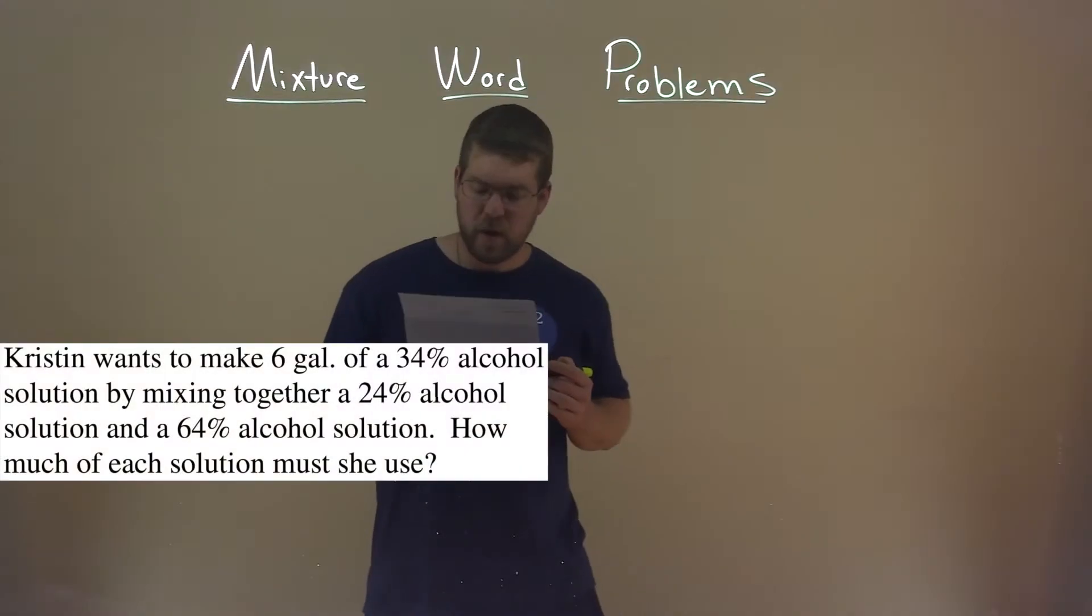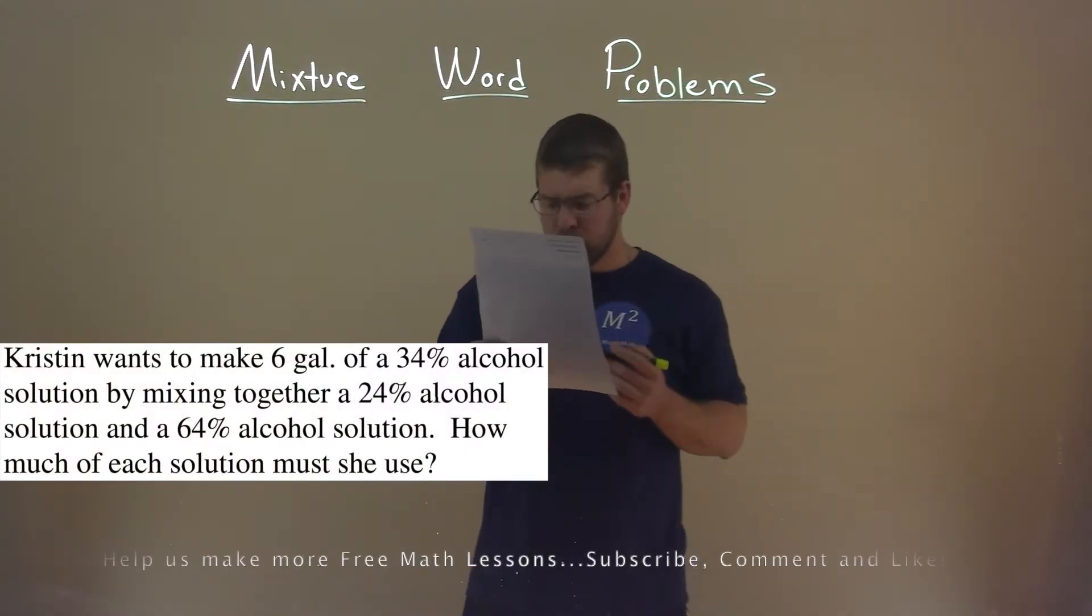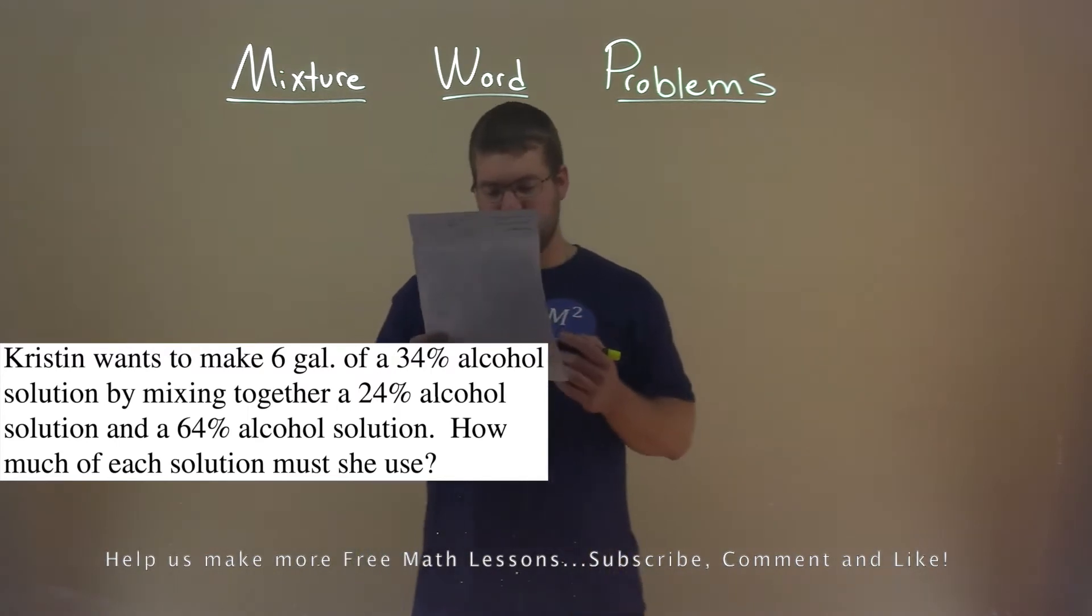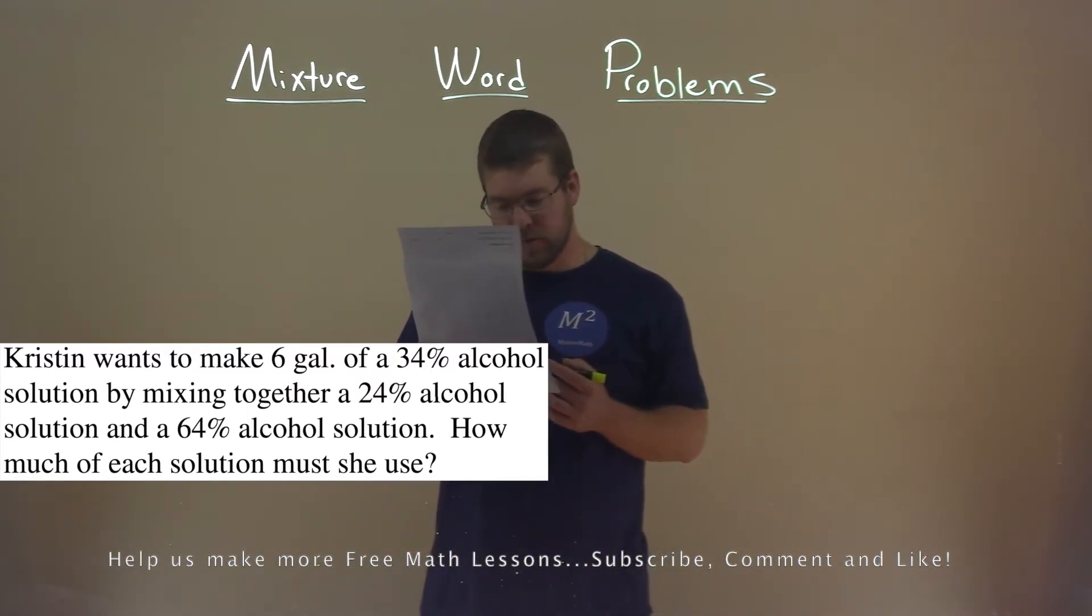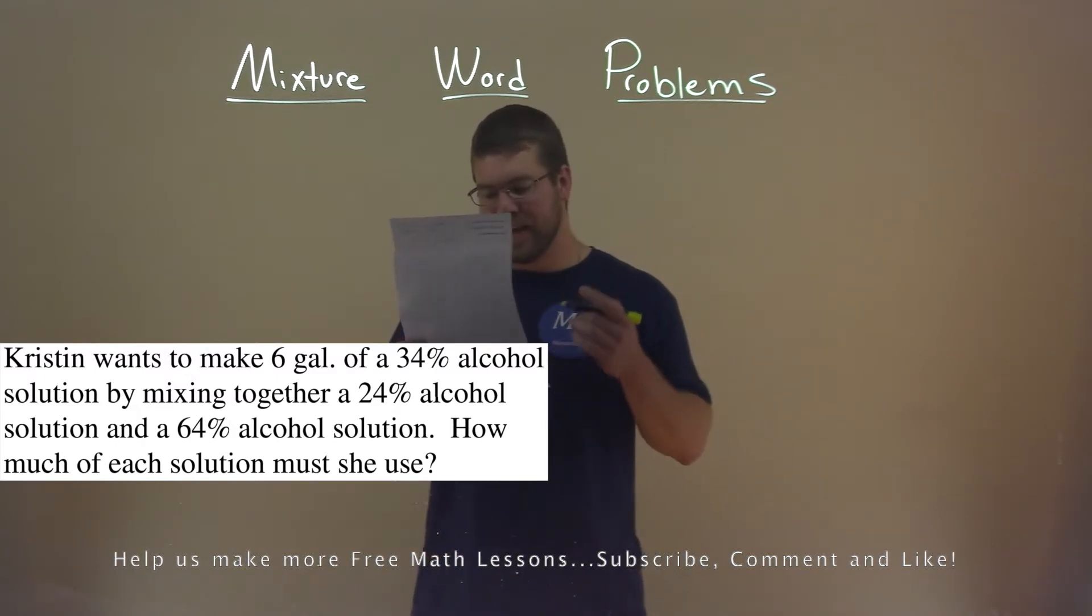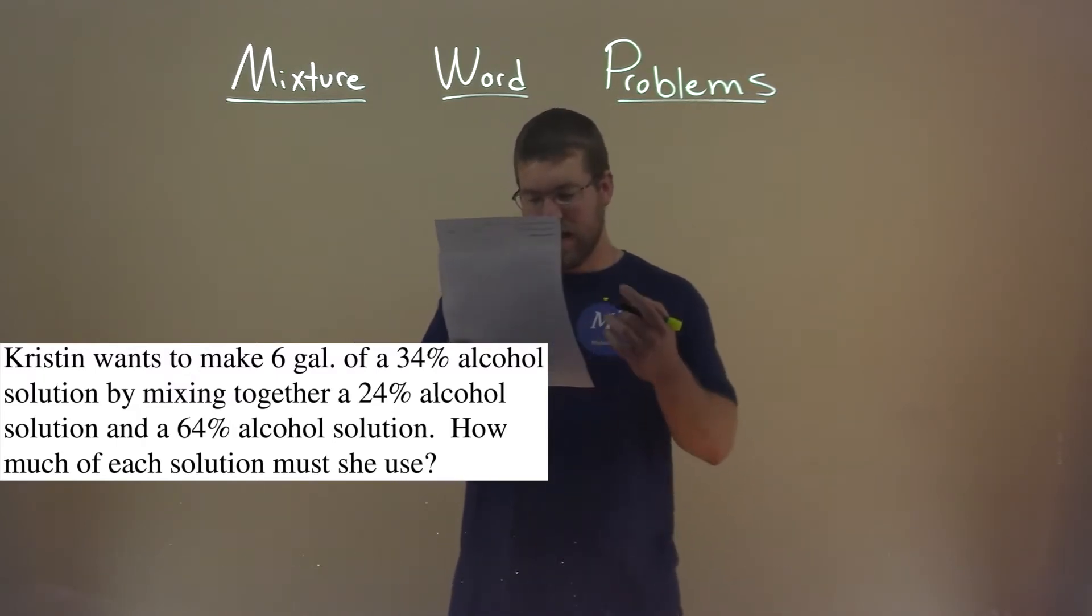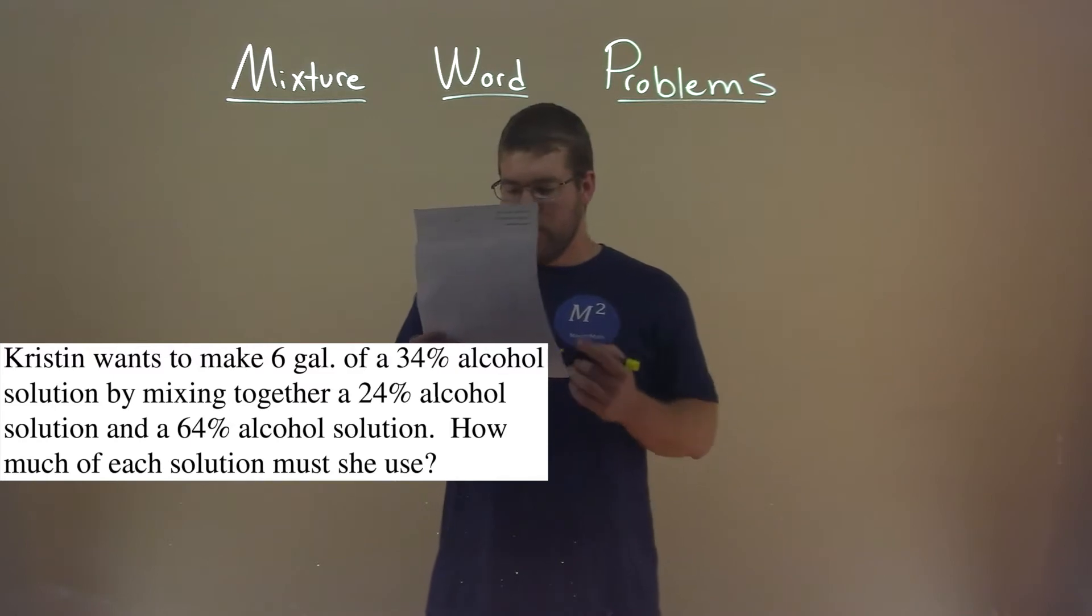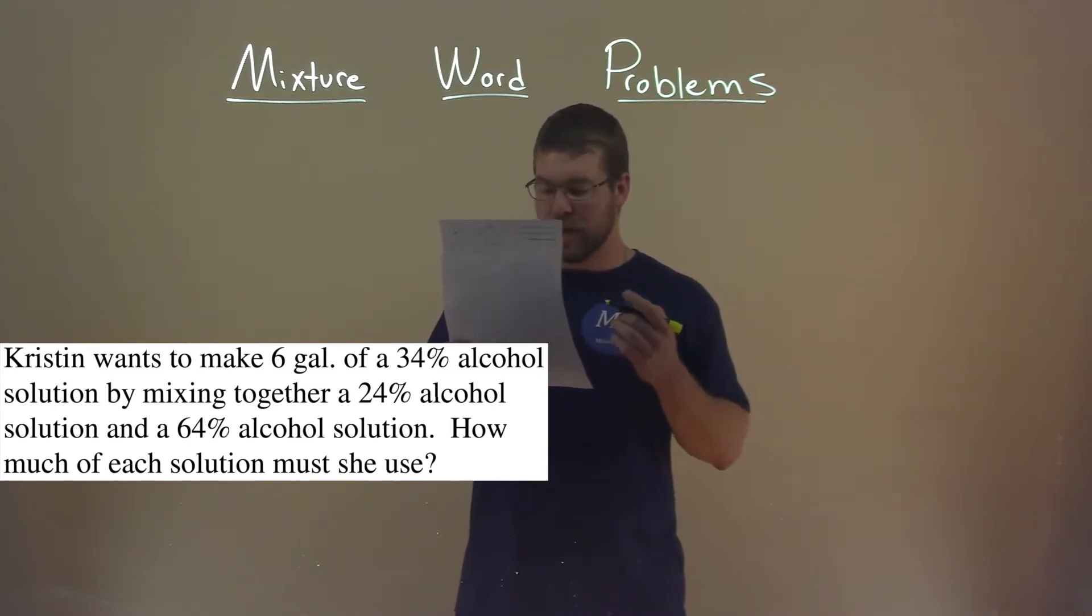We're given this problem right here. Kristen wants to make 6 gallons of a 34% alcohol solution by mixing together a 24% alcohol solution and a 64% alcohol solution. How much of each solution must she use?